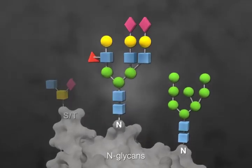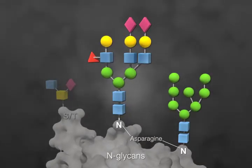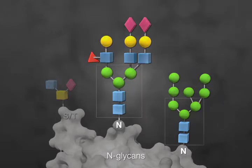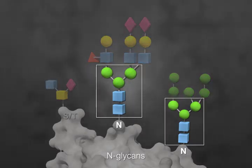N-glycans are attached to asparagine residues of the protein, shown with an N. N-glycans have a common biosynthesis pathway, which is reflected in the common structure of their core.